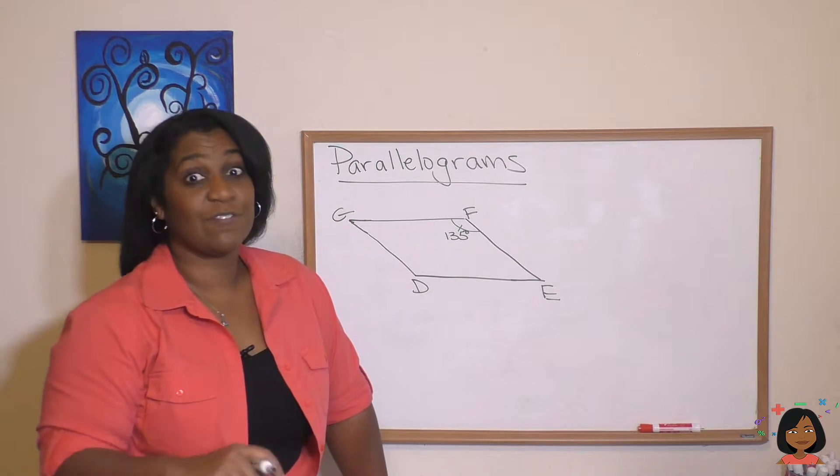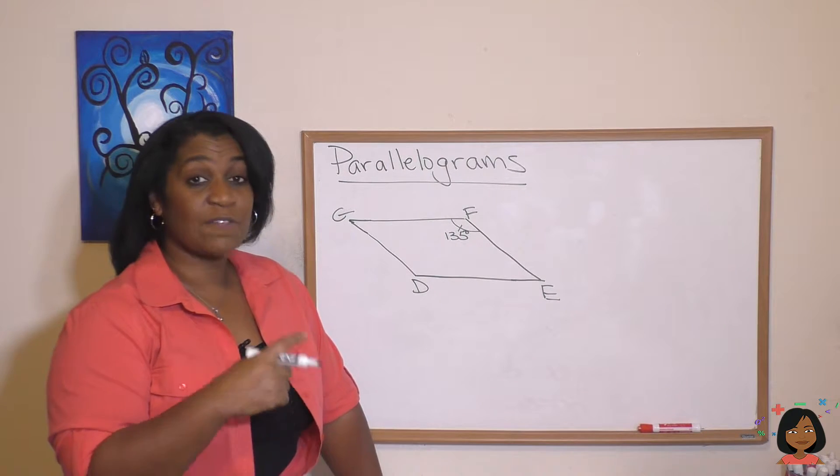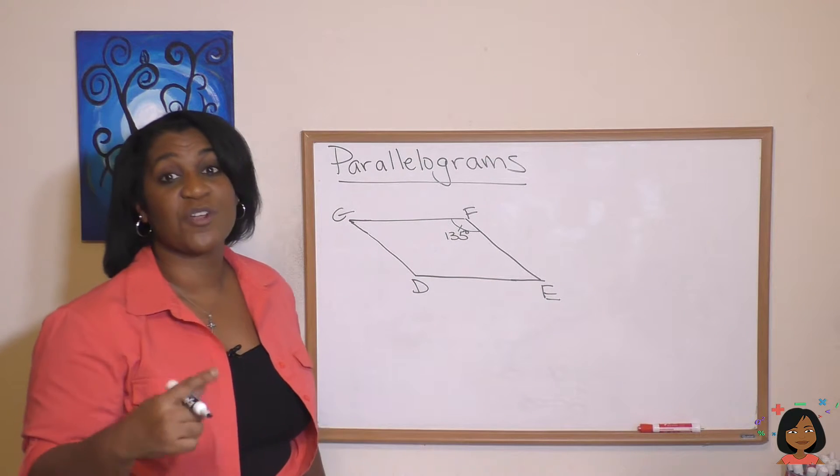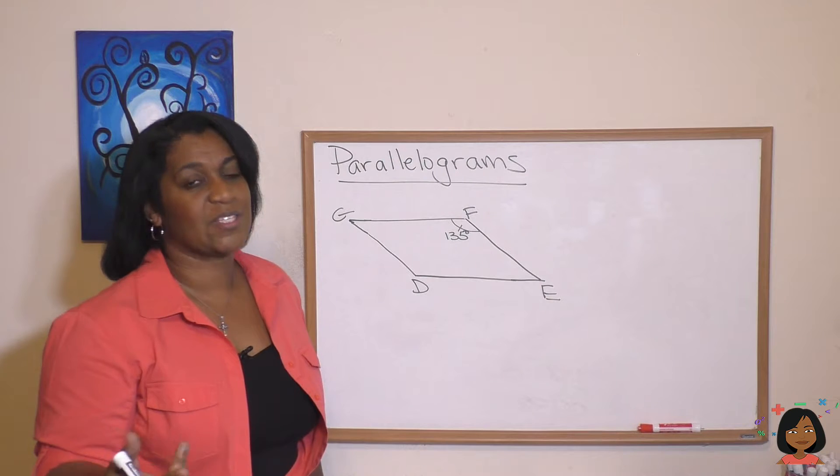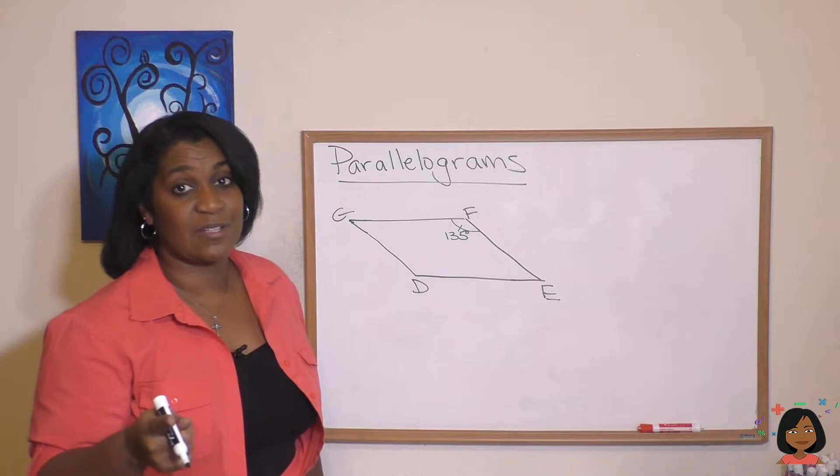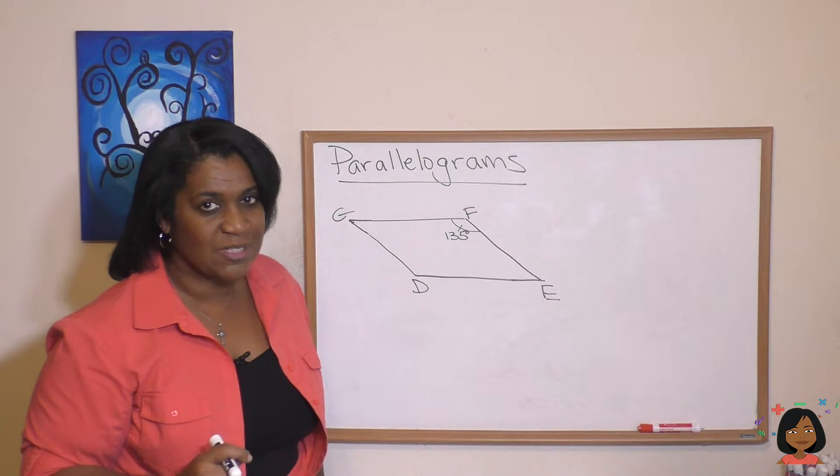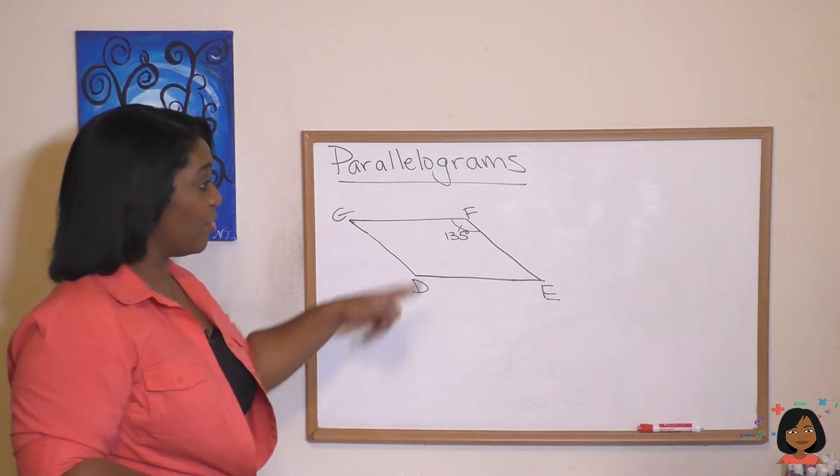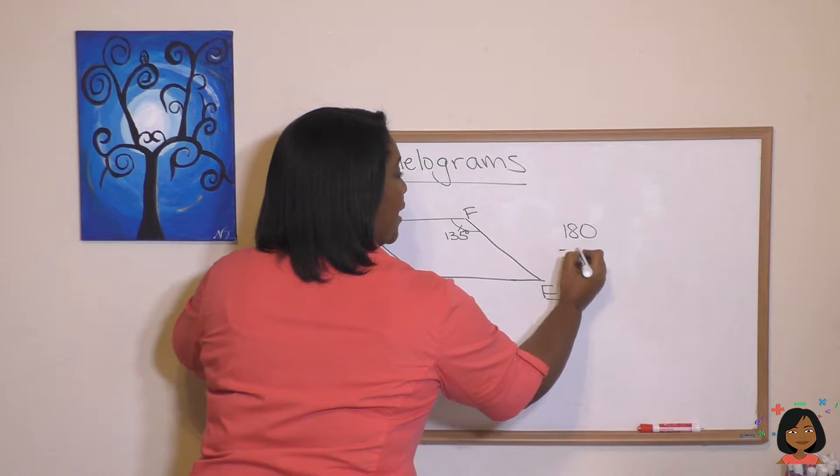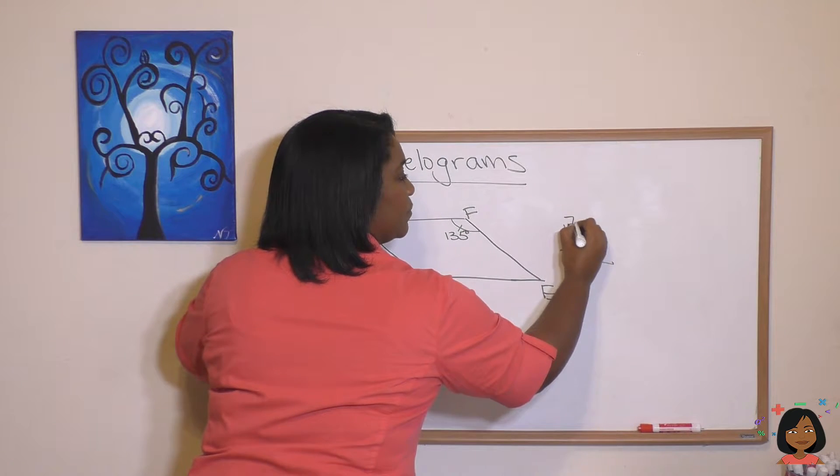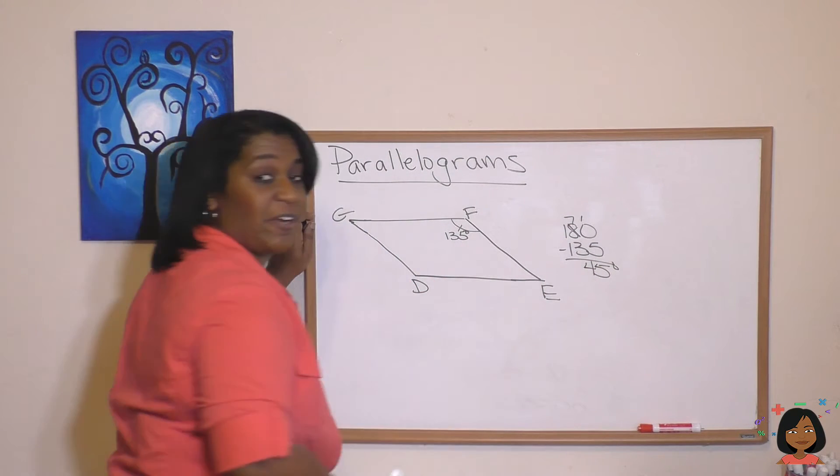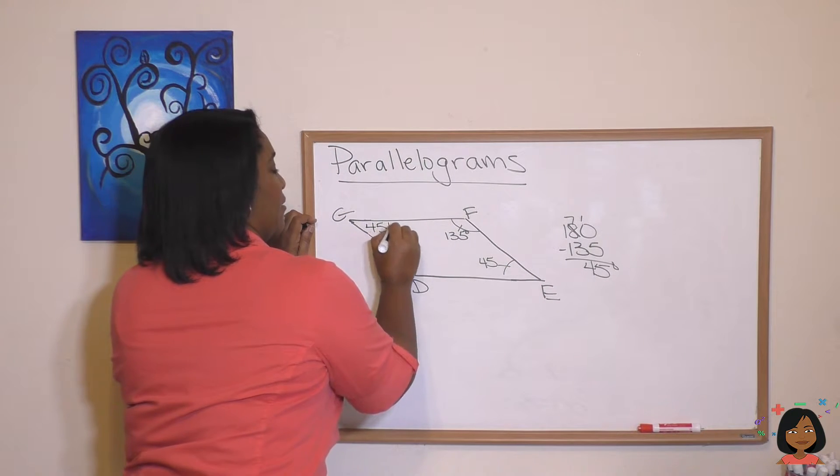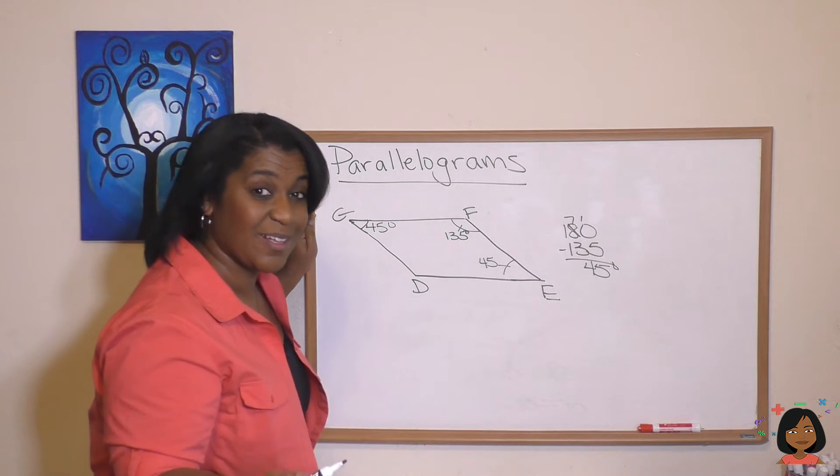Let's look at another example. Here I have a parallelogram. I'm only giving you one angle, but let's find all of the degrees or the measurement of the other angles. Okay, so angle F is 135 degrees. So what does that tell us? Well, we know that the adjacent angles will be supplementary—they will add up to 180. So that's angle G and angle E. Well let's do the math: 180 minus 135 is 45 degrees. That means that this angle is 45 and this angle is 45.